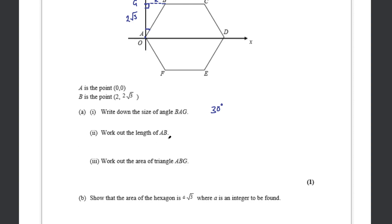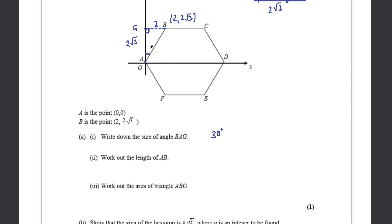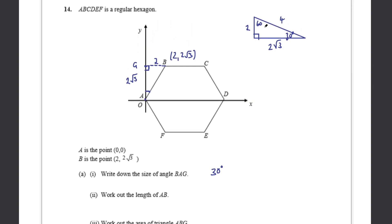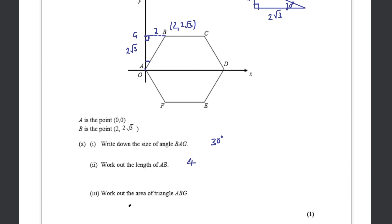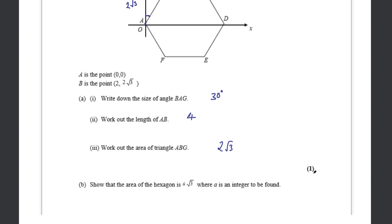Part 2 says work out the length of AB. Looking at the right-angle triangle I just drew, the hypotenuse — which is AB — has length 4, since in the scaled 30-60-90 triangle with legs 2 and 2√3, the hypotenuse is 4. Part 3 says work out the area of triangle ABG. Using base times height divided by 2: 2 × 2√3 / 2 = 2√3.